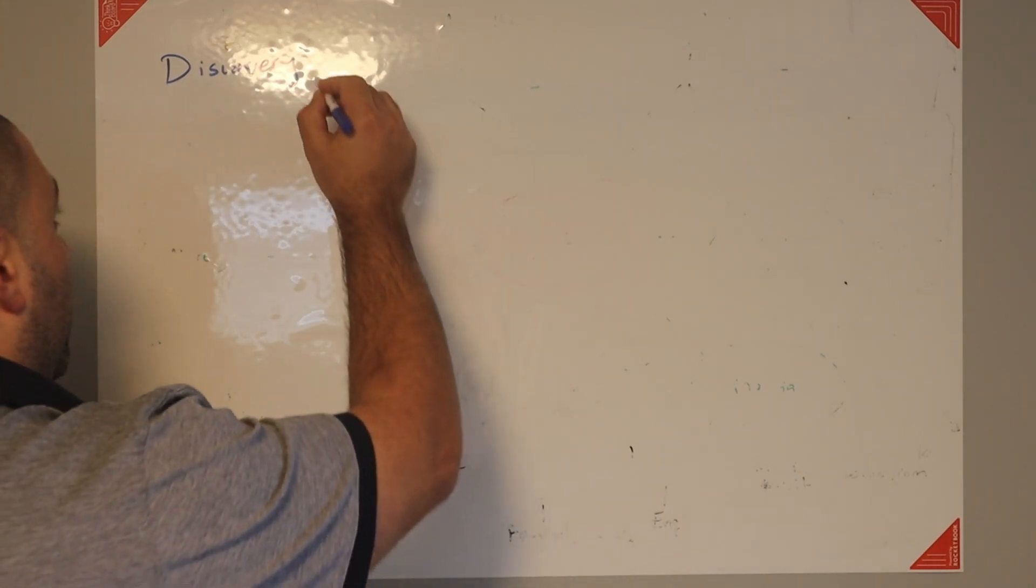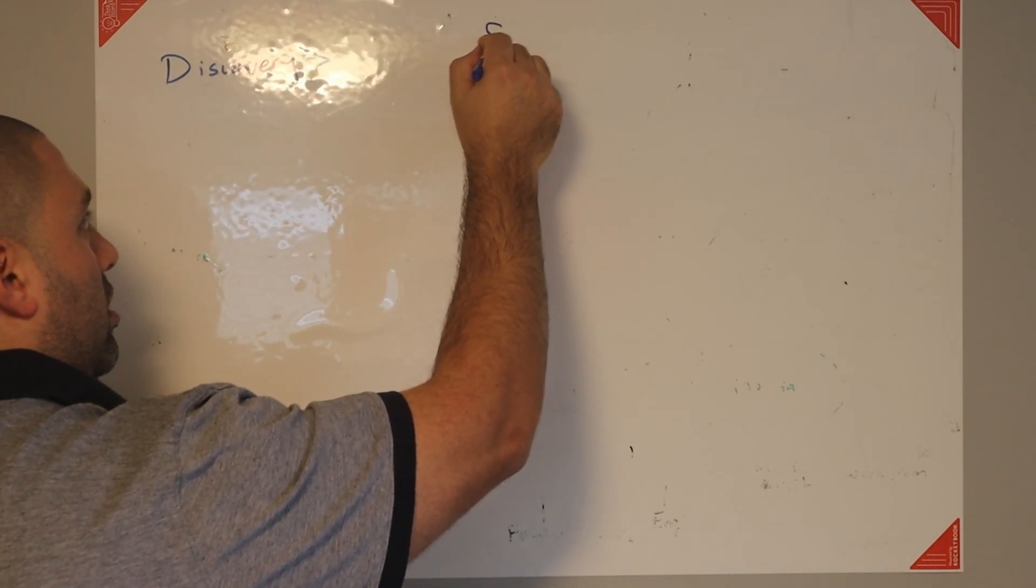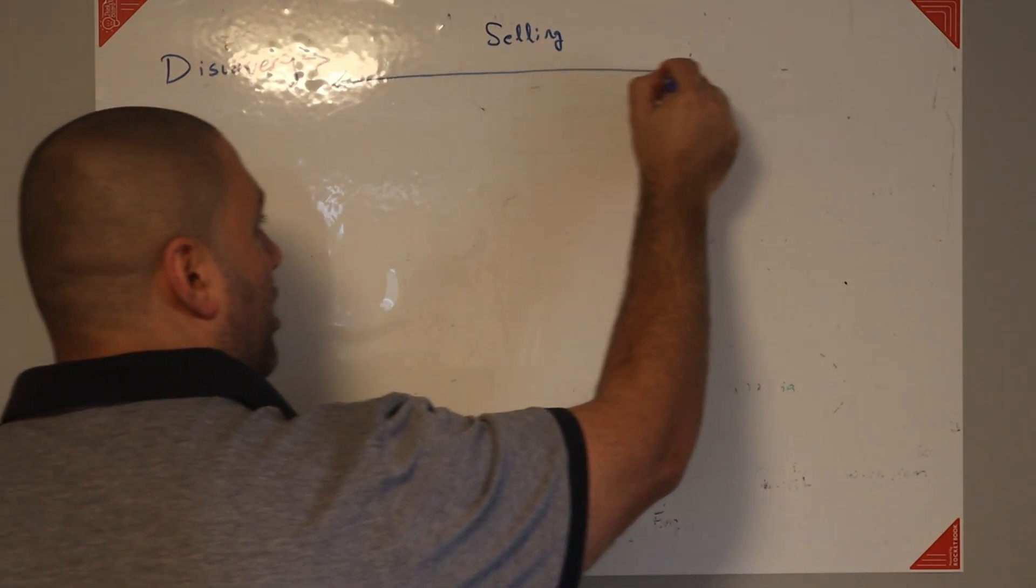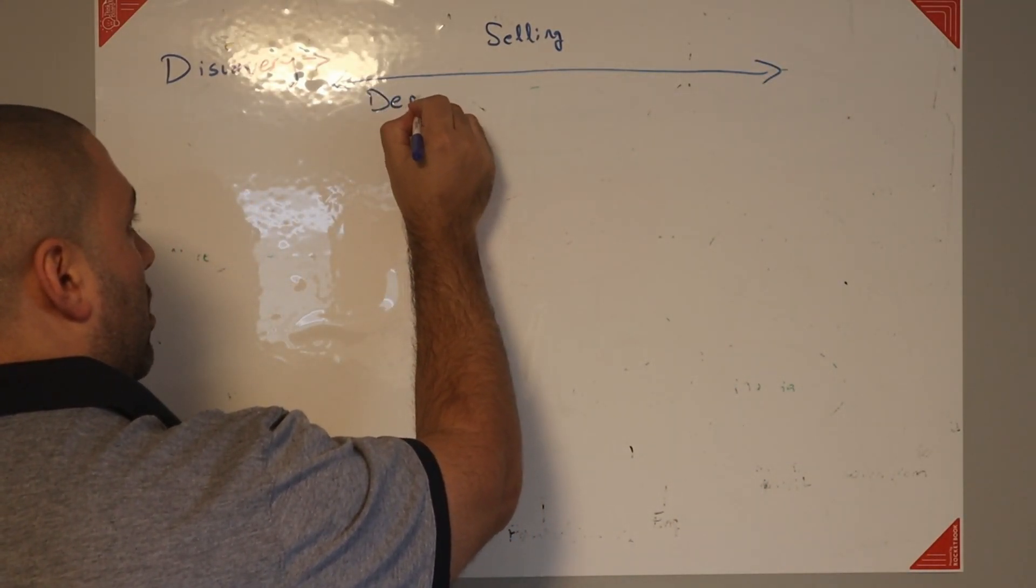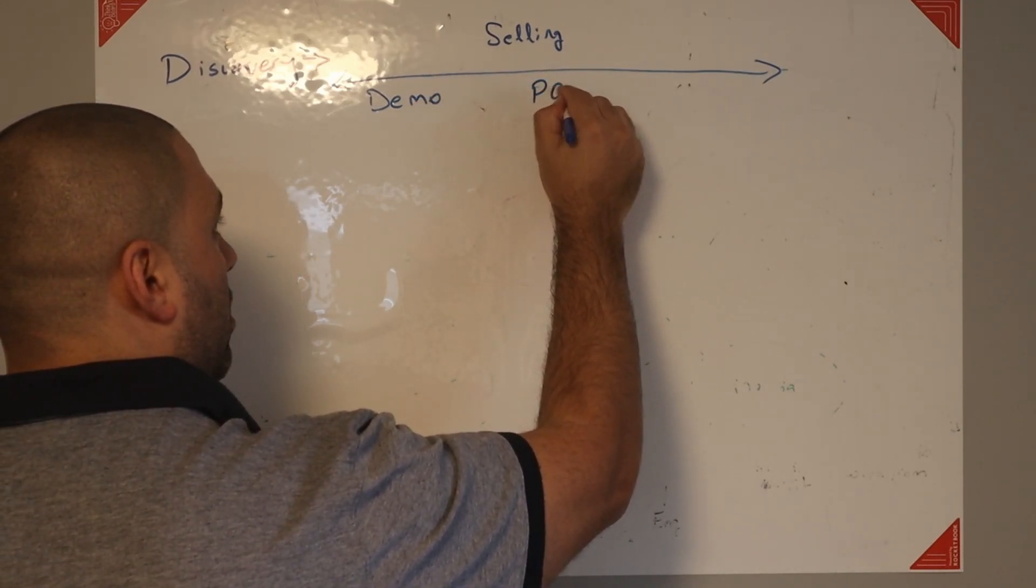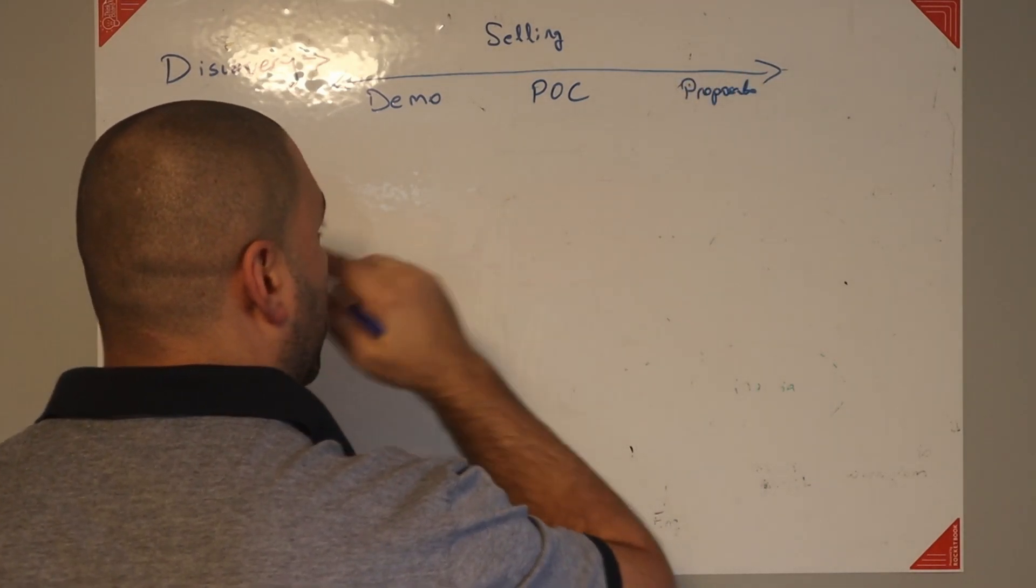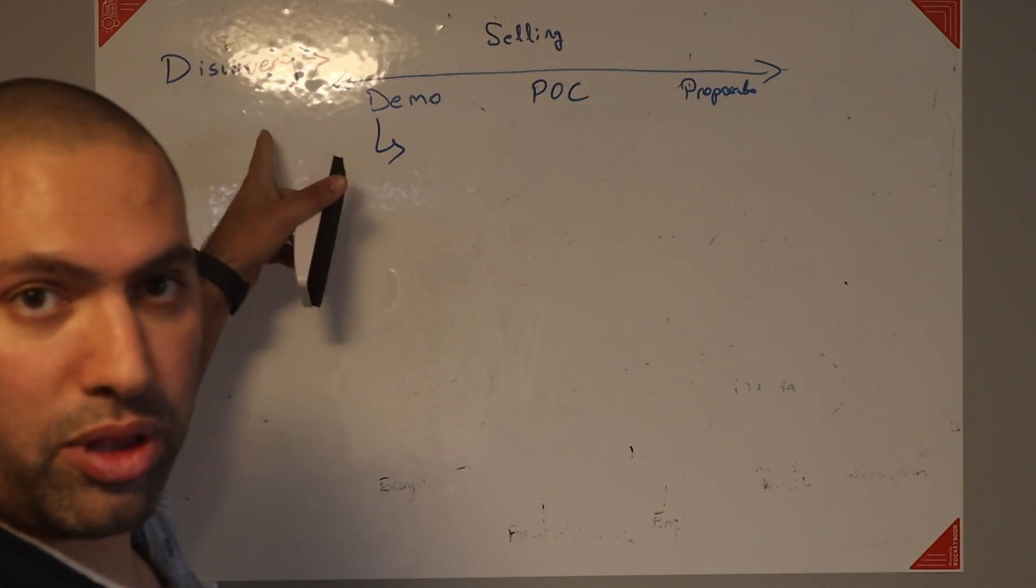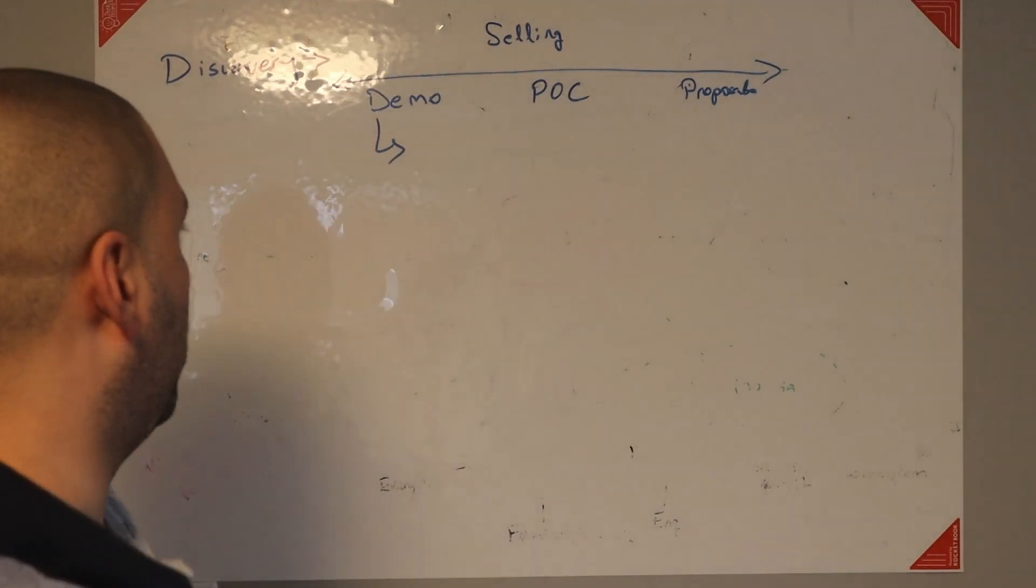The next step of the sales cycle is selling. So in selling, it has multiple steps. You can do the demo, there could be a proof of concept, and we could be talking about proposals. So when we're doing the demo, if you did a proper discovery, and you know exactly what the problem is that they're trying to solve, you can do a customized demo.